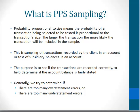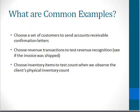Generally, we try to determine if there are too many overstatements or if there are too many understatements with this kind of testing. Some common examples are to choose a set of customers to send accounts receivable confirmation letters, or we could use this kind of sampling to choose revenue transactions to test revenue recognition — for example, to trace invoices to shipping documents.